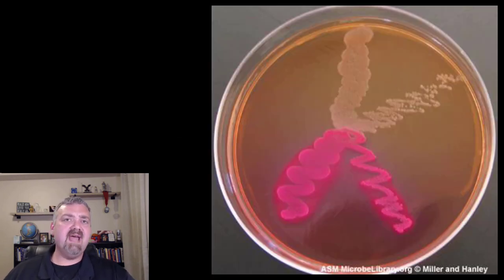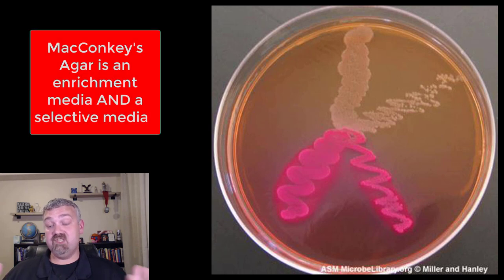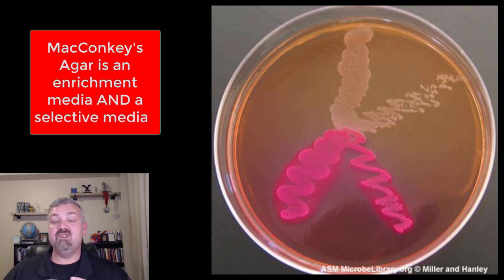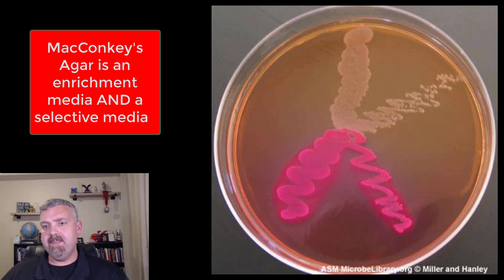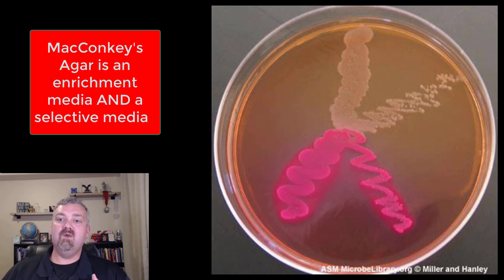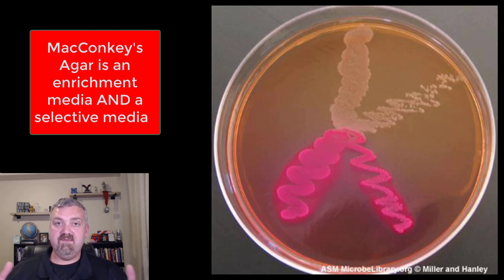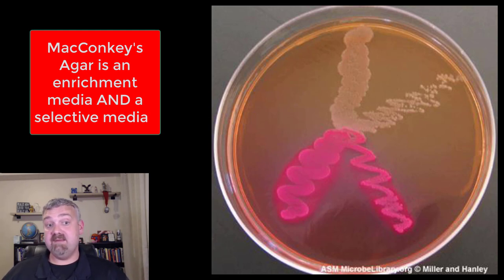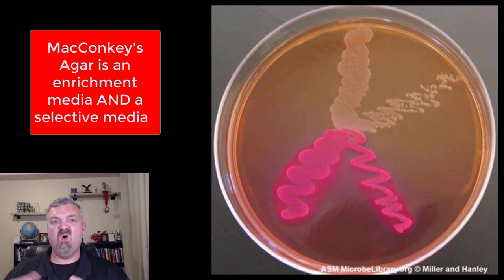There's definitely going to be some overlap between these different types of media. This next one would be both an enriched and a selective media — it's called MacConkey's agar. It has bile salts and crystal violet, which keeps almost all gram positives from growing. So it's a selective media because it keeps gram positives from growing, but it also helps gram negatives grow that like to live in your gut — the enteric bacteria. A lot of organisms that grow inside our guts love MacConkey's agar, and it's great for looking for organisms like Pseudomonas and E. coli.